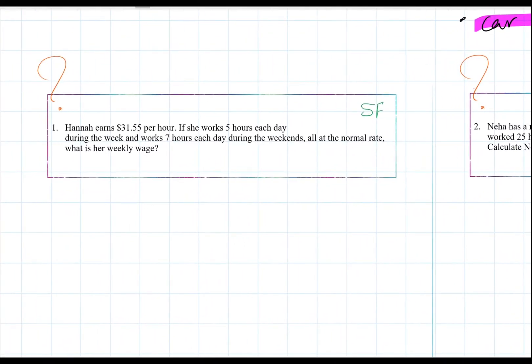So this is a simple familiar question that we were beginning with. So Hannah earns $31.55 per hour. If she works 5 hours each day during the week and works 7 hours each day during the weekends, all at the normal rate, what is her weekly wage?